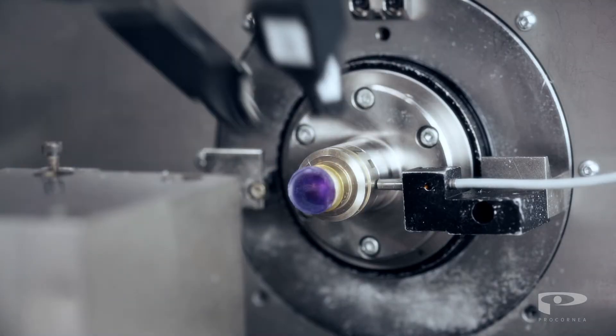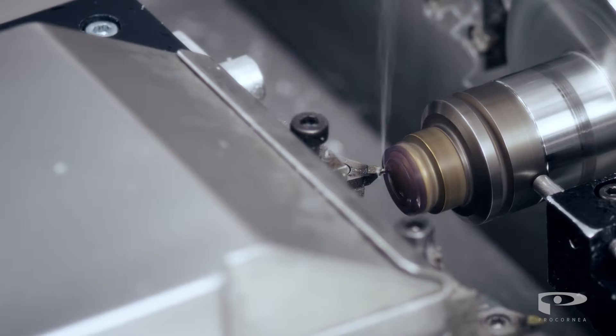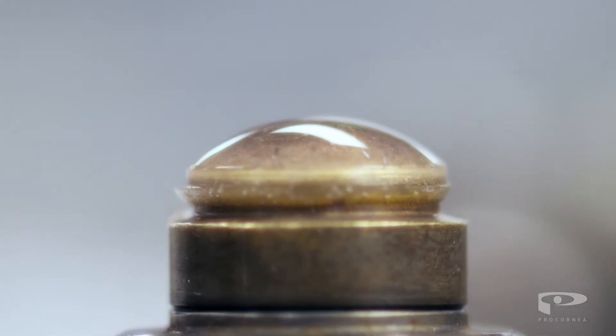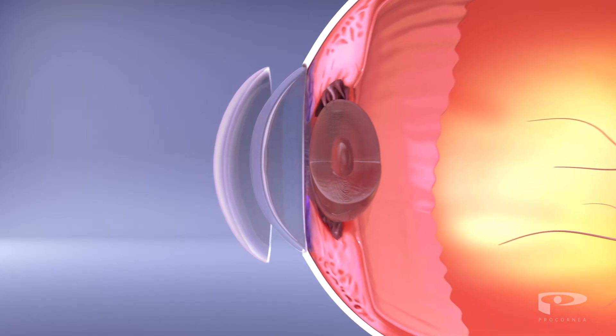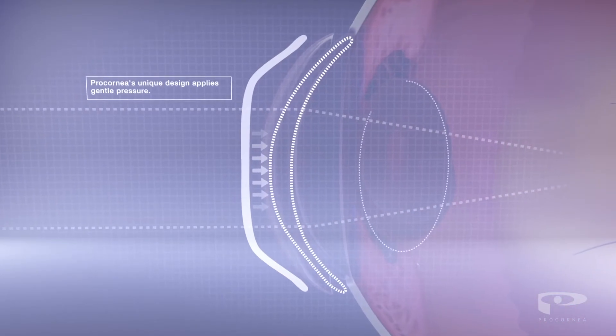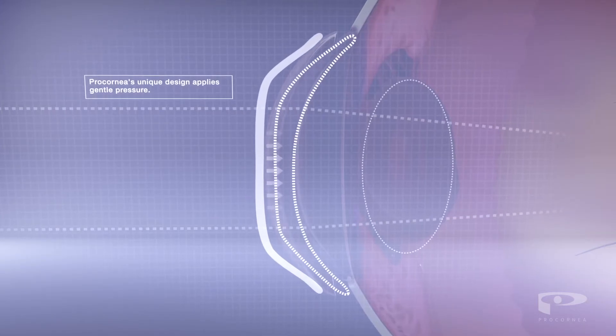Using our advanced technology, Ortho-K lenses are custom-made for the needs of each individual patient. The highly breathable lenses are worn overnight and change the shape of the cornea through gentle pressure, realigning the focal point onto the retina while you sleep.